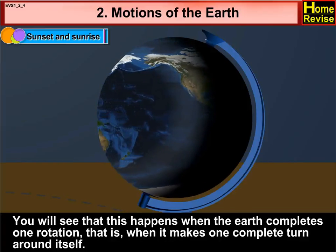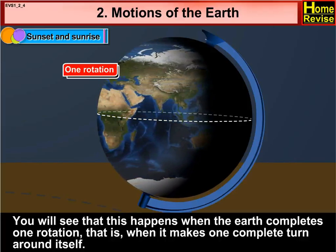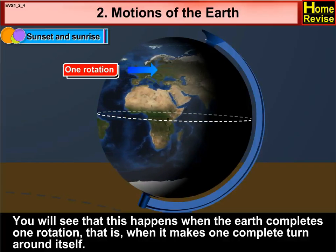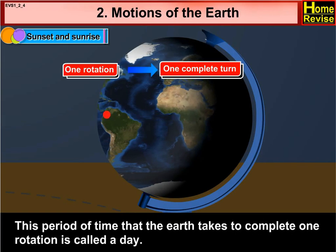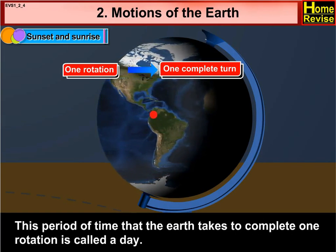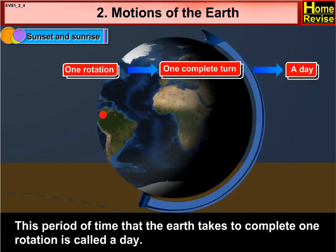You will see that this happens when the earth completes one rotation, that is, when it makes one complete turn around itself. This period of time that the earth takes to complete one rotation is called a day.